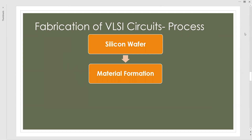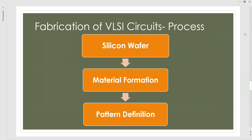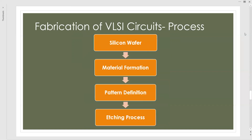Then we go for the next step, that is pattern definition. Once the creation of the material is done, we go for the define step. In the defining step, pattern definition is carried out by means of photolithography. Here in pattern definition, a pattern mask is created which we want to design onto that silicon wafer.